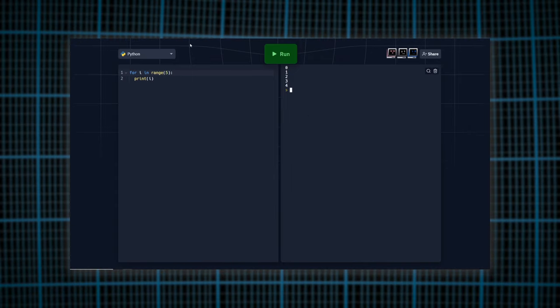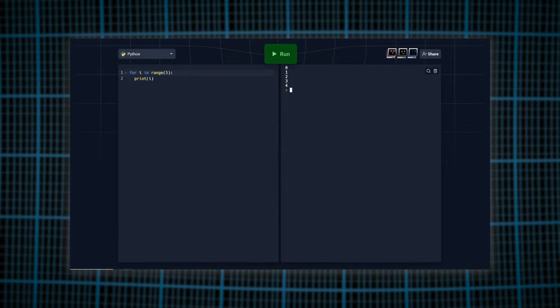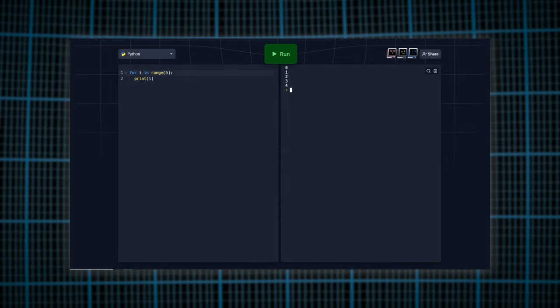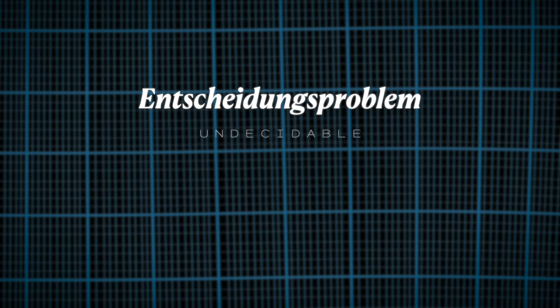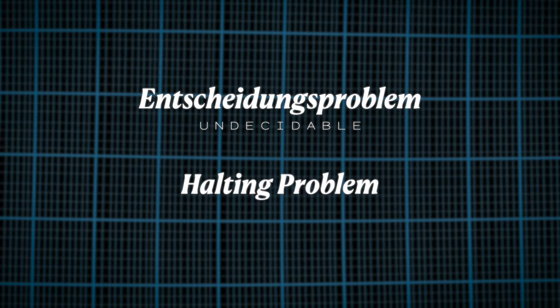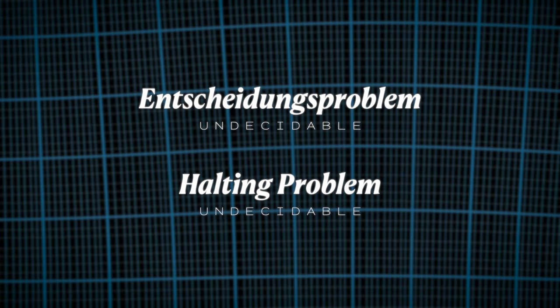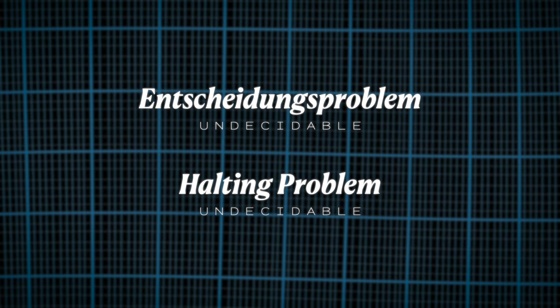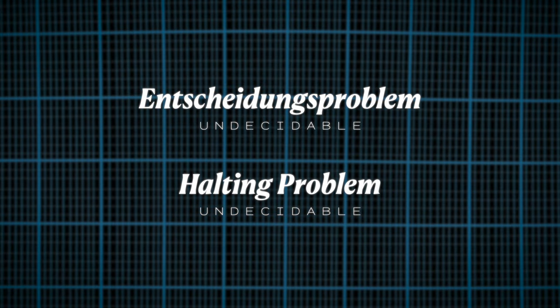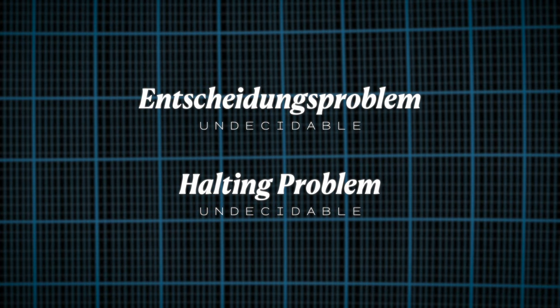However, the halting problem asks if there is a general method that can be used to determine whether any given program will halt or not, regardless of the specific program or input. And in this paper, Turing proved that not only is the Entscheidungsproblem undecidable, but that the halting problem is undecidable as well, meaning it cannot be solved with an algorithm. He showed that for any attempt to build such an algorithm, there would always exist a statement for which the algorithm could not determine if the statement is true or false. This realization was a major breakthrough in computability theory and gave a mathematical framework for understanding the limits of what computers can do.